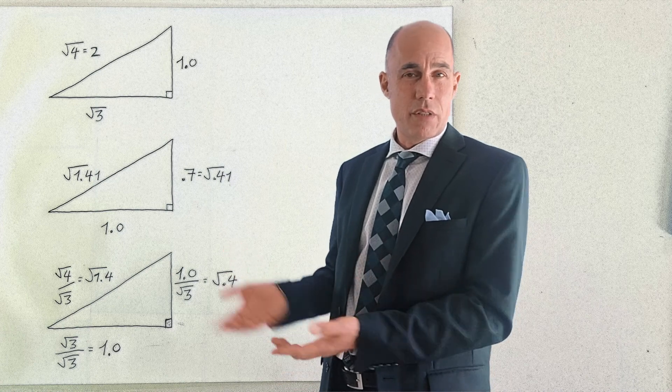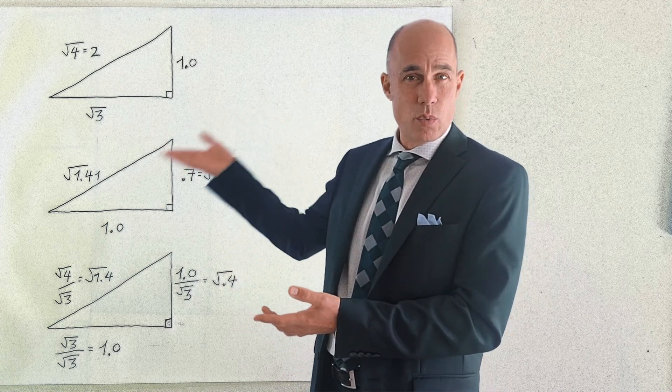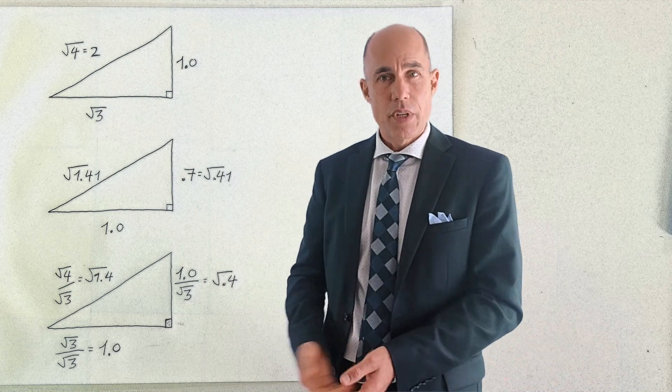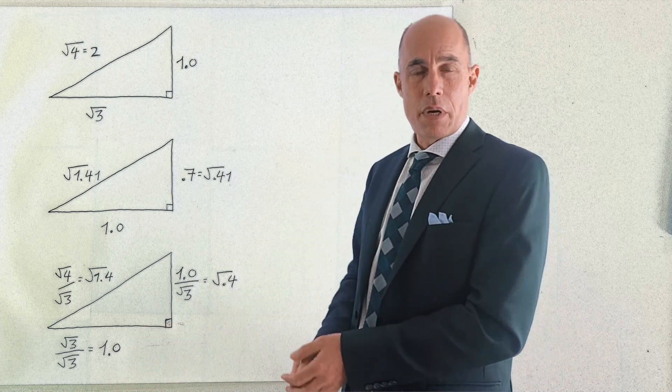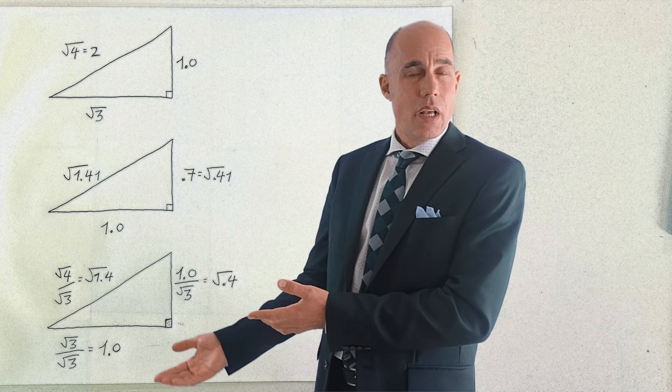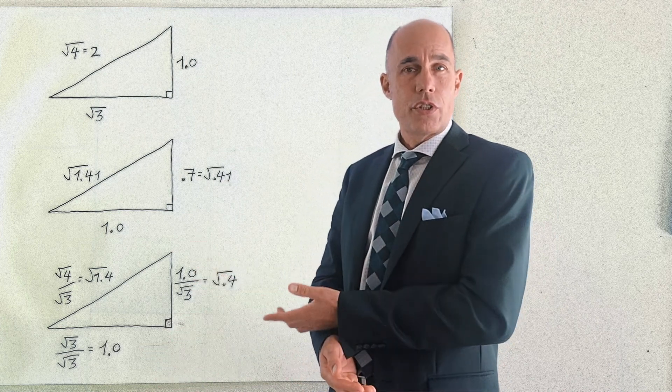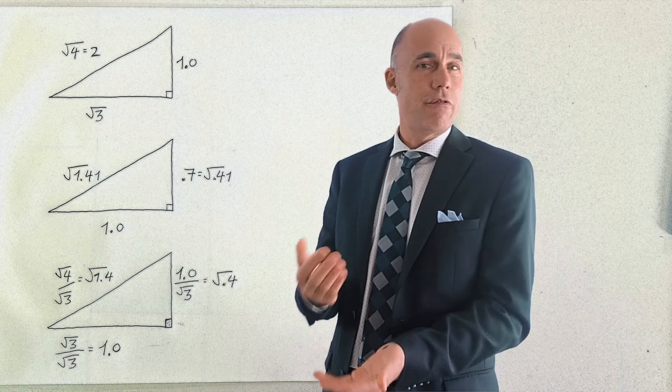So in order to find the dimensions of the special right triangle when the base is 1 we have to divide all three sides by the square root of 3. So the square root of 3 divided by square root of 3 is 1 and now the other side 1 divided by the square root of 3 in base 12 results in the answer of the square root of 0.4.